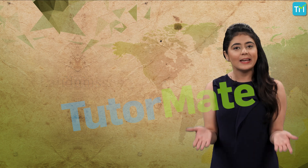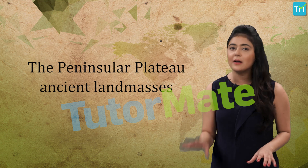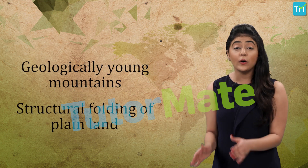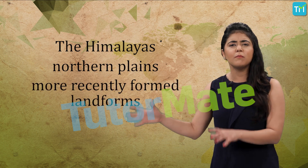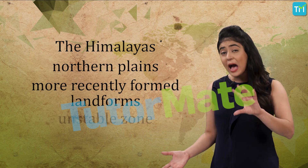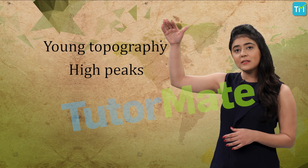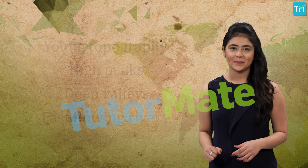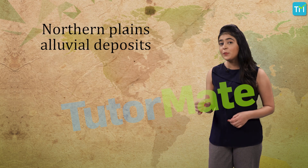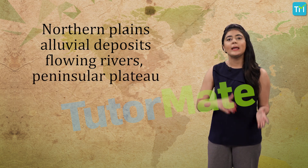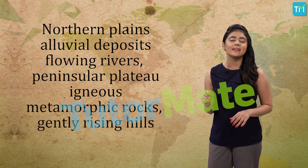Just like humans, land masses also have age. The peninsular plateau is one of the most ancient land masses of the earth's surface and is supposed to be one of the most stable land blocks. The Himalayas and the northern plains on the other hand are more recently formed land masses and have an unstable zone. They represent a very young topography that comprises of high peaks, deep valleys and fast flowing rivers. While the northern plains are formed of the alluvial deposits brought down by the flowing rivers, the peninsular plateau is formed by igneous and metamorphic rocks and is characterized by gently rising hills and wide valleys.